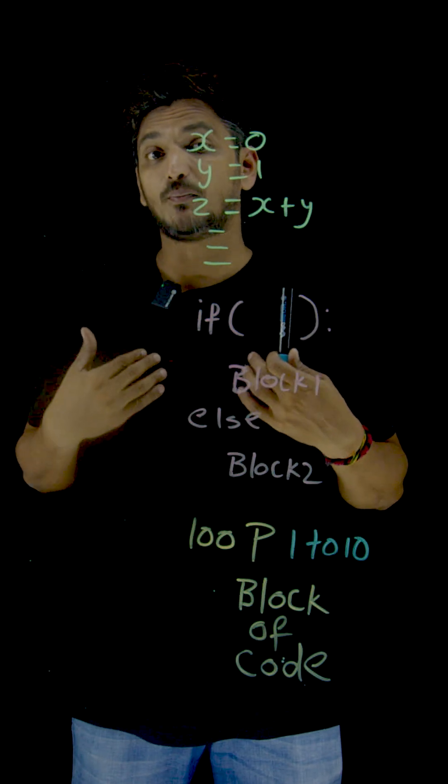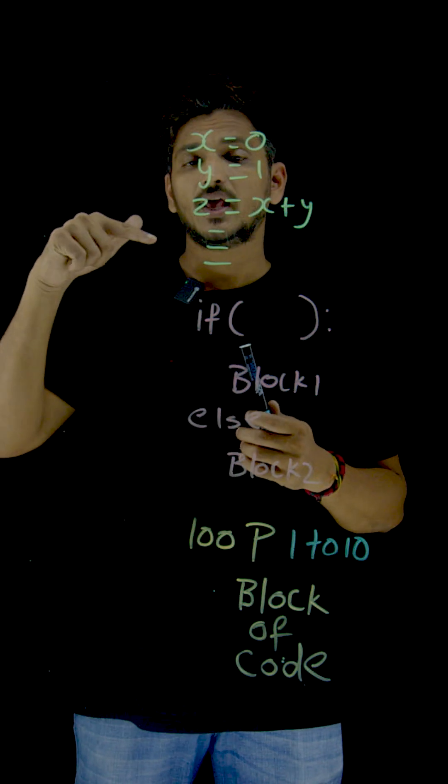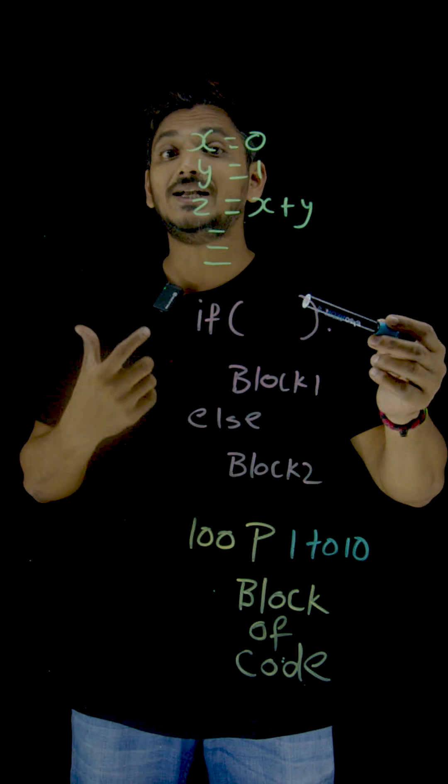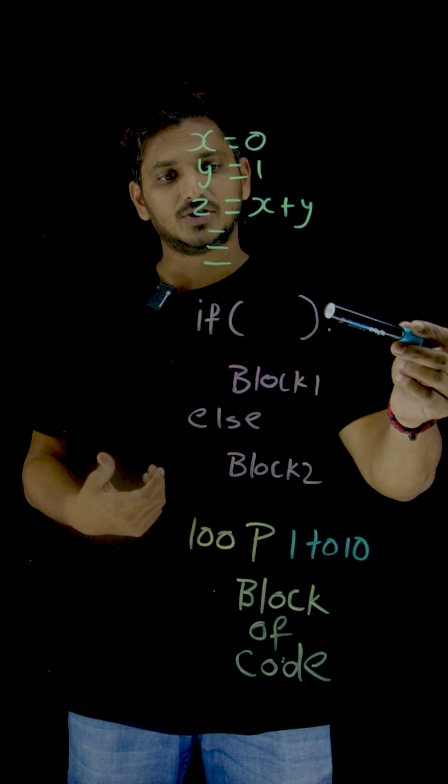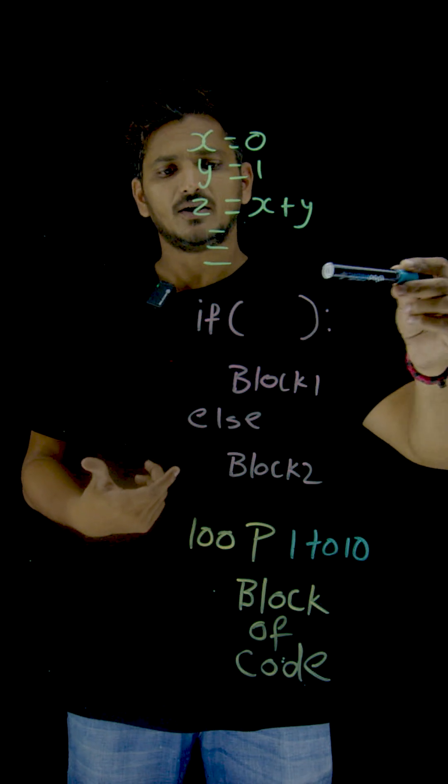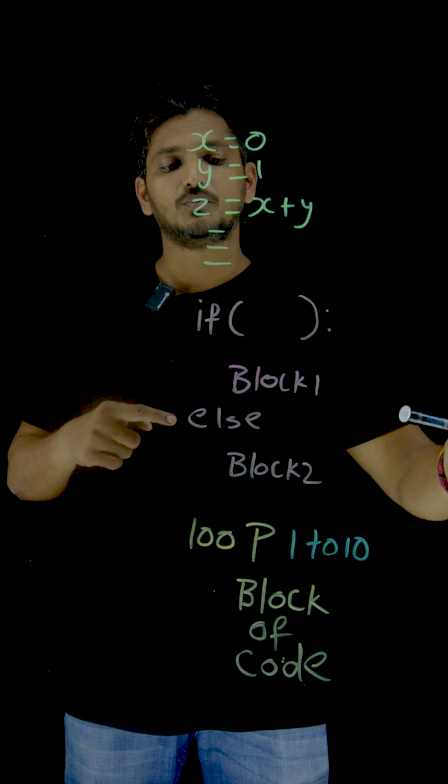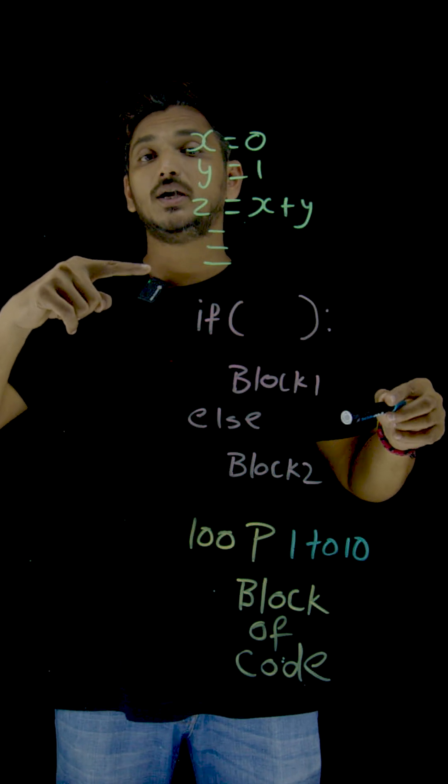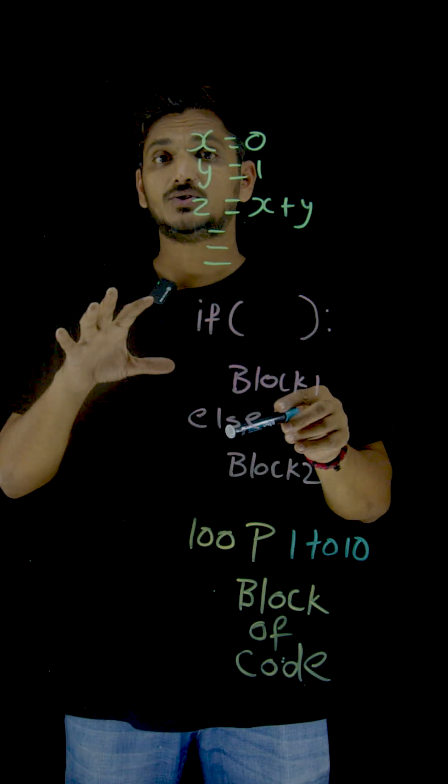That's why in the next section we discussed conditional statements, which means if this condition happens, execute block one. If this condition falls, then don't execute block one, directly jump to block two. We understand how to jump from one point to other point in coding. Based on this, we can write complex logics.